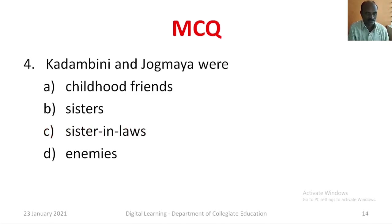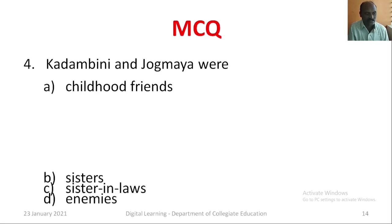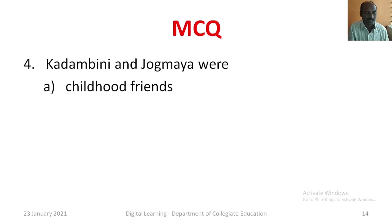Question number four: Kadambini and Jogamaya were — Option A: Childhood friends. Option B: Sisters. Option C: Sister-in-laws. Option D: Enemies. The correct answer is Option A, childhood friends.